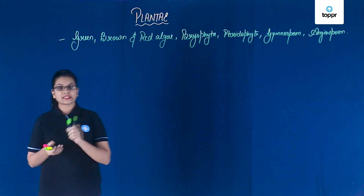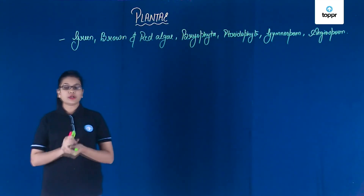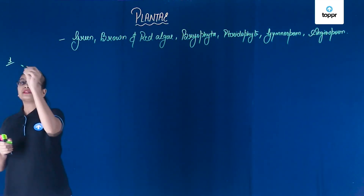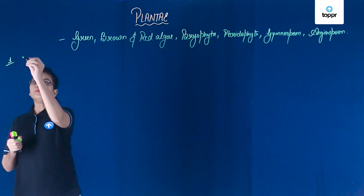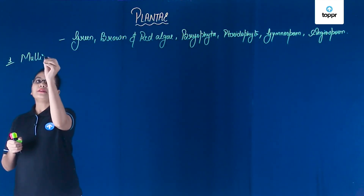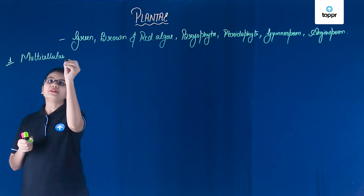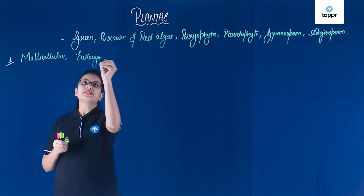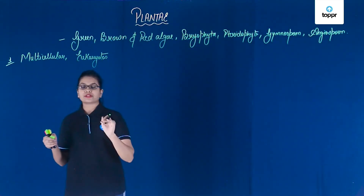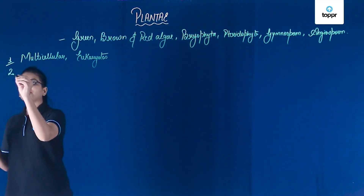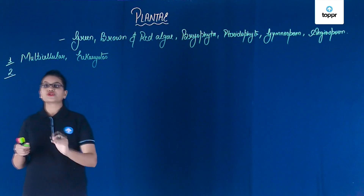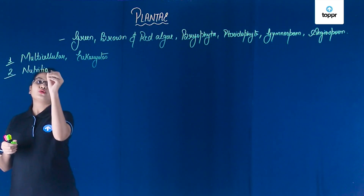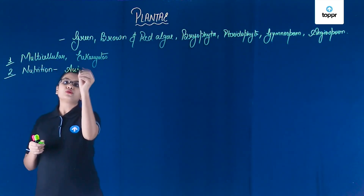Now we will learn about the basic characters of kingdom Plantae. We already know a lot about plants, so let's summarize the main points. The first important point is that these organisms are multicellular and eukaryotes. Next, plants are those organisms which are autotrophic in terms of nutrition.